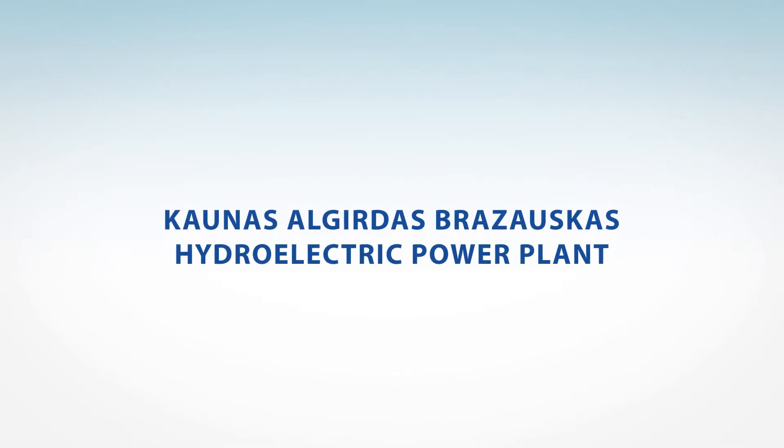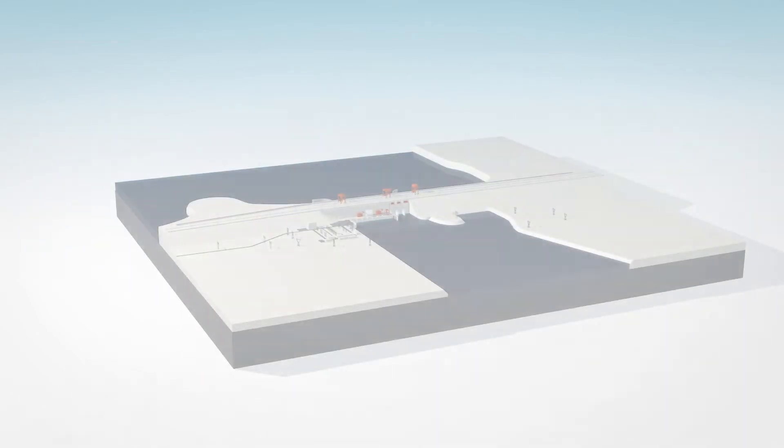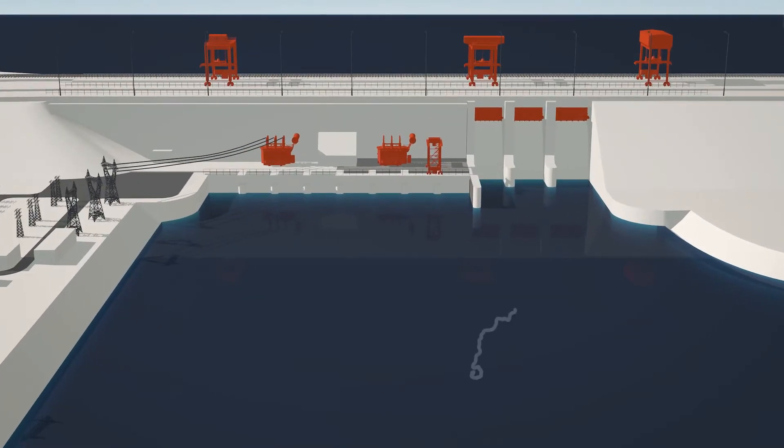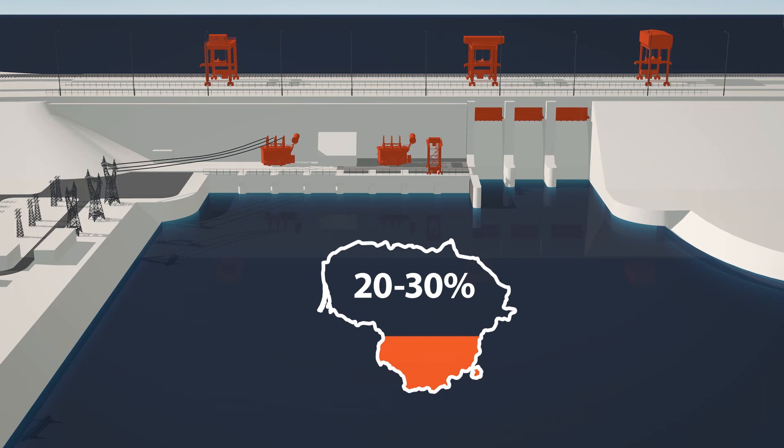The Kaunas Algirdis Brazauskas Hydroelectric Power Plant is the largest power plant in Lithuania that uses renewable resources. It generates some 20 to 30 percent of the electricity produced from renewable resources in the country each year.